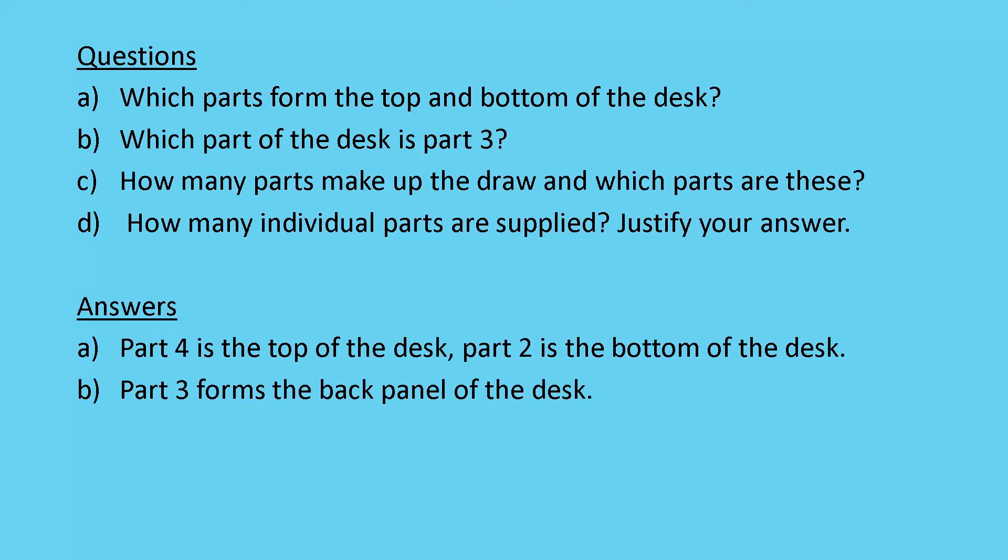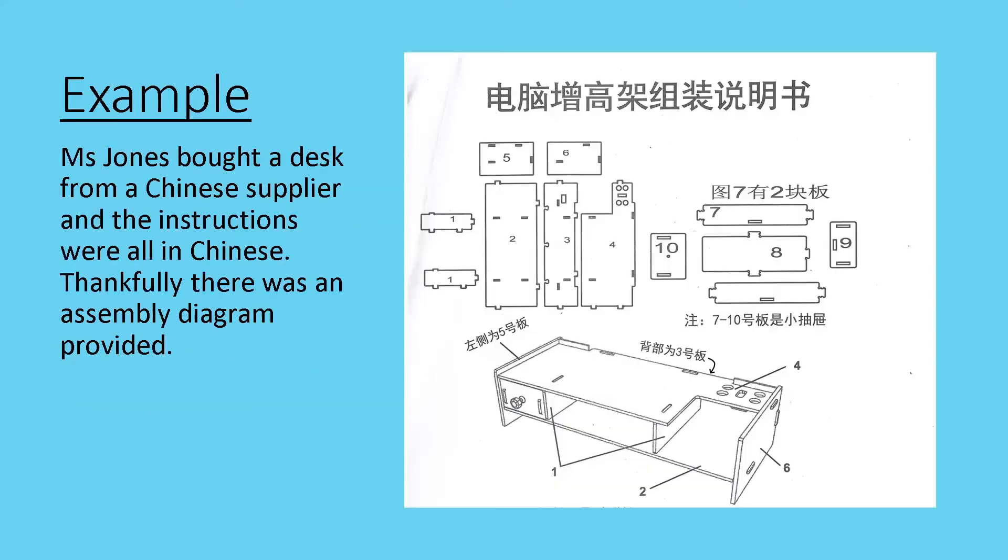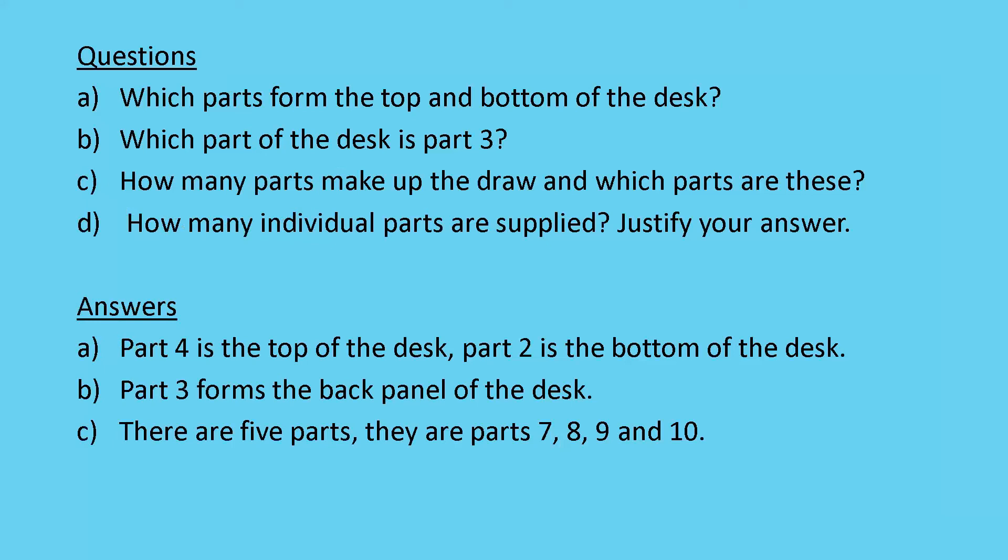How many parts make up the drawer? And which parts are these? Well, looking here again, the drawer, we can assume, would be the parts 7, 8, 9, and 10. Because the other parts are all involved in making the main body of this whole thing. So, there are 5 parts, parts 7, 8, 9, and 10. Even though I've only listed 4 parts there, there are 5 because number 7 is actually doubled up.